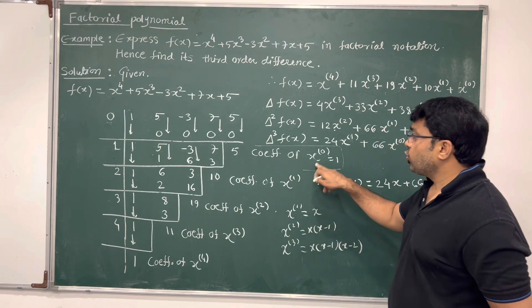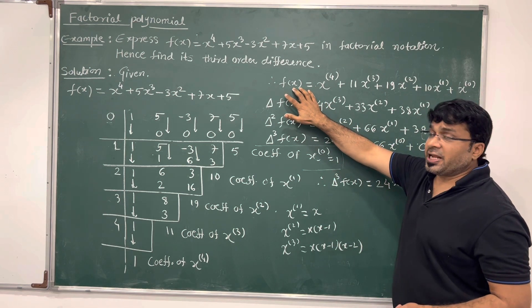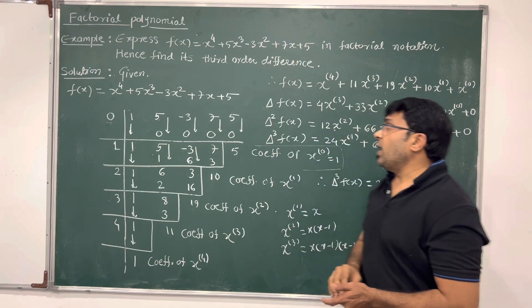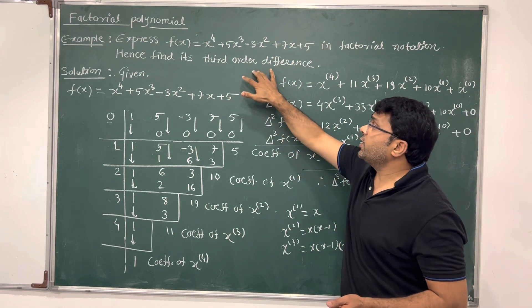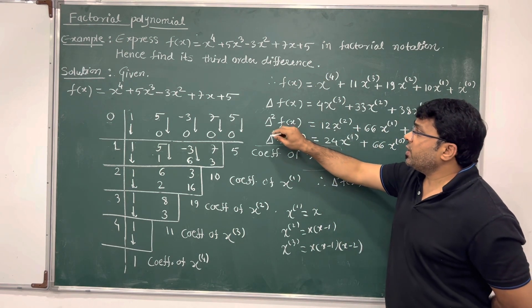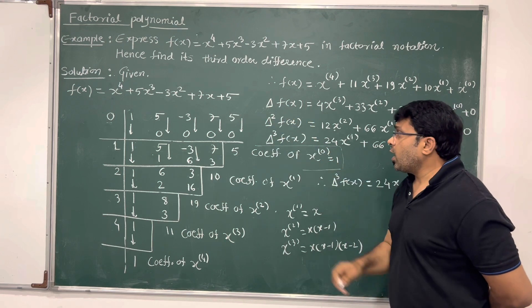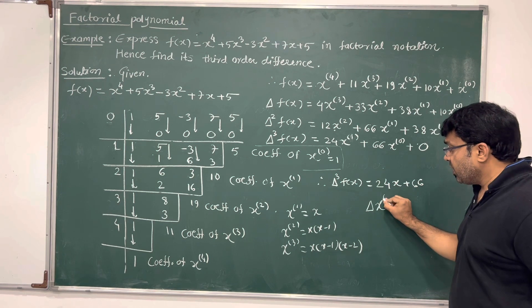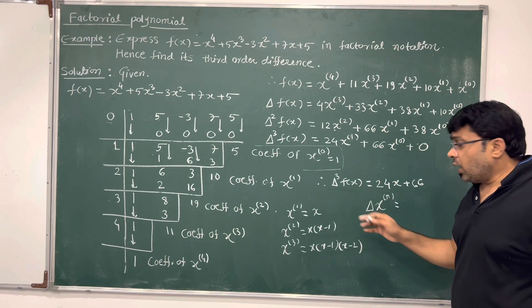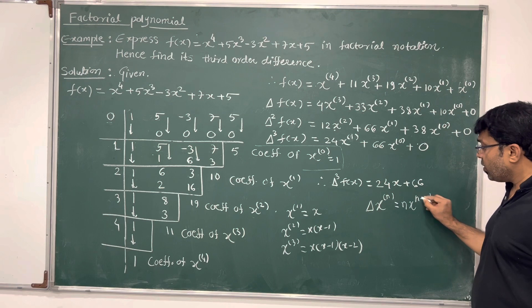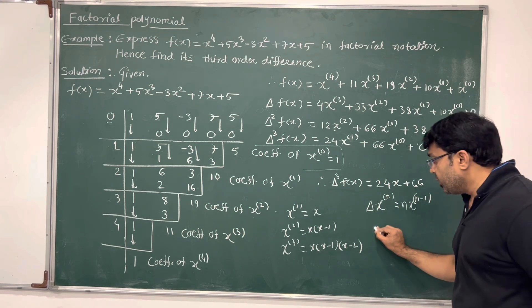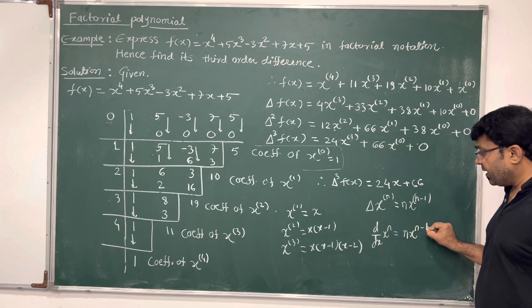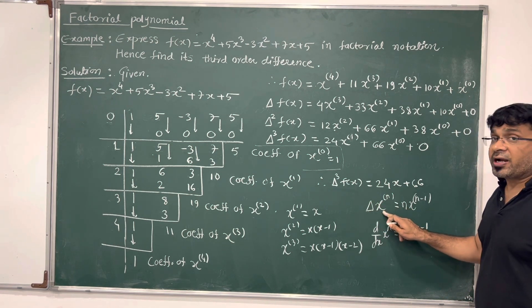x to the power 0 factorial is 1. So we have expressed the given function as a factorial polynomial of degree 4. Now we find the third order forward difference. We apply the delta operator, which is the forward difference operator. The key formula is: delta of x to the power n factorial equals n times x to the power n minus 1 factorial — it acts like the differential operator, just as d/dx of x to the power n equals n times x to the power n minus 1.